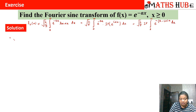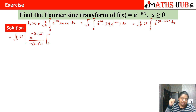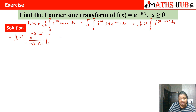That gives us √(2/π) × Im[ ∫₀^∞ e^(−(a − iα)x) dx ]. Integrating, we get e^(−(a − iα)x) divided by −(a − iα), evaluated from 0 to ∞. When we put in the limits, e^(−∞) = 0 and e^0 = 1, giving us −1 in the numerator.